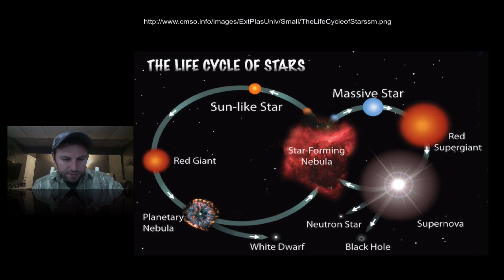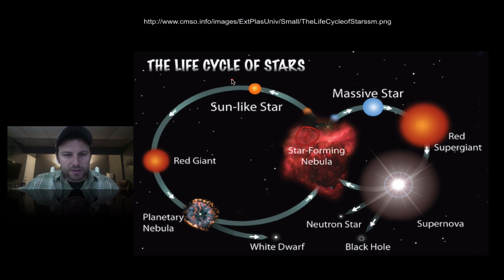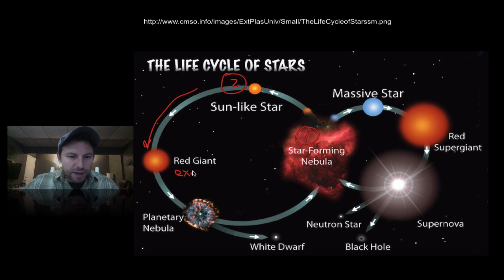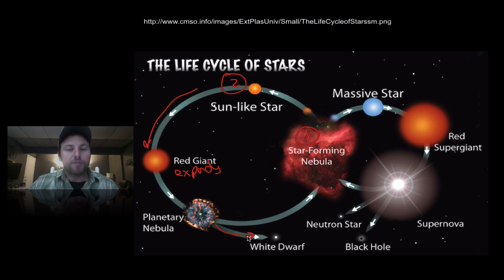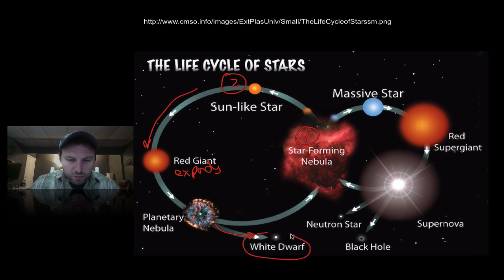So at that point, we start with the star-forming nebula — stage one. Then we get to the sun-like star in stage two. In between there we have a protostar — it's not quite a star yet. Eventually going into our red giant phase, where it expands. After it's done fusing helium, it's going to eject a planetary nebula from it, and at that point it will become a white dwarf. Some of that gas and dust left over may go into forming another star, but this is the fate — this is where our sun will end.